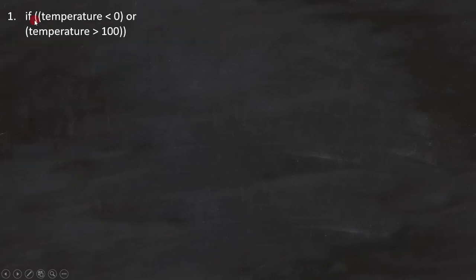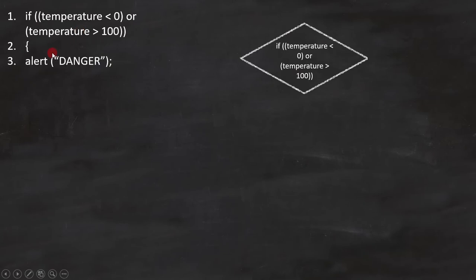First line is a condition: if temperature is less than zero or temperature is greater than 100. And the flowchart looks like this. If this condition is true, then the third statement alert danger will be executed. This is how we can draw the flowchart for it.